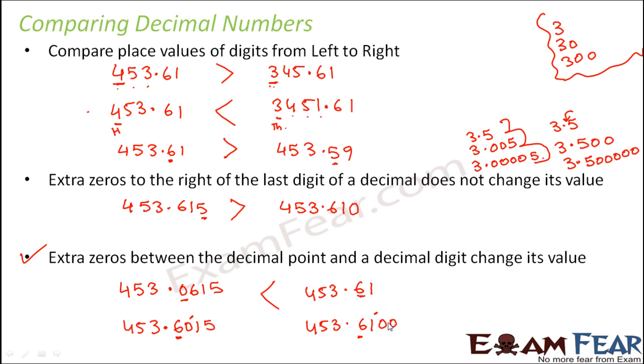0.61 basically means 0.6100. So 6100 is greater than 015. Basically this represents 100, this is representing 15. So this is lesser. So this would be greater.